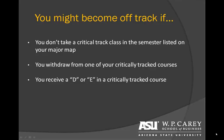Although it's possible to be off track once, if you are off track twice for the same reason, you will be required to change your major out of WP Carey. One example of being off track twice is if a student earns a grade of D in Math 210, repeats the course, and receives a grade of D on the second attempt. Two D grades in Math 210 is cause for dismissal from the WP Carey School of Business.